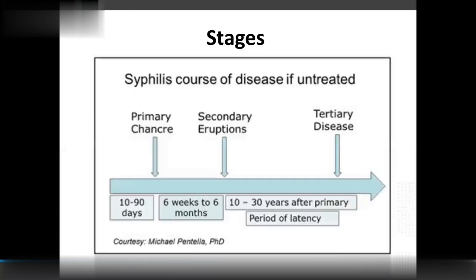Syphilis follows a stepwise course of disease if untreated: primary chancre, secondary eruptions, and tertiary disease. The primary stage lasts 10 to 90 days, secondary eruption around 6 weeks to 6 months, and the final tertiary stage may appear 10 to 30 years after the primary period of latency.